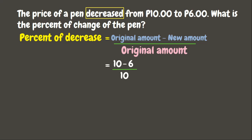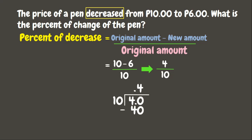Now let us solve. Ten minus six is four, divided by ten. Let's divide four by ten. Since four is smaller than ten, we need to add point zero. Let's put the decimal point above. Forty divided by ten is four. Four times ten equals forty. Subtracting gives us zero. Our answer is point four.